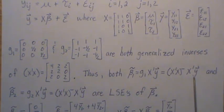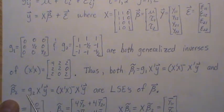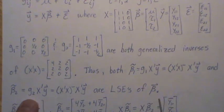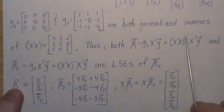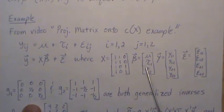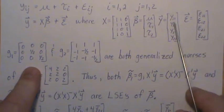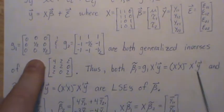So that means that beta 1 tilde, where we used g1 for the generalized inverse, is a least squares estimate. And beta 2, where we use g2 for the generalized inverse of x transpose x, is also a least squares estimate for beta. They're both least squares estimates. Now, if we do the simple math on these, so if we look at this, and we plug in this one here, and x is this, and we just generically call it y11, y12, y21, y22.